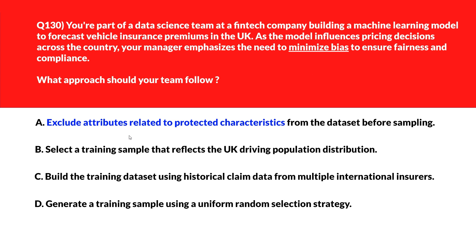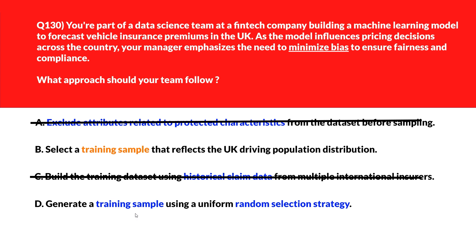Now let's look at the question about minimizing bias. Option A says to exclude attributes related to protected characteristics before sampling — removing protected characteristics alone doesn't ensure balanced representation, so it's incorrect. Option B says to select a training sample that reflects the UK driving population distribution — a representative training sample helps minimize bias by aligning model behavior with real-world demographics — let's keep this. Option C uses historical claim data from multiple international insurers — global data introduces population mismatch, making bias reduction ineffective for UK-specific predictions. Option D uses uniform random selection — random sampling may ignore distributional imbalances, risking biased outcomes. We'll lock option B as the right answer.